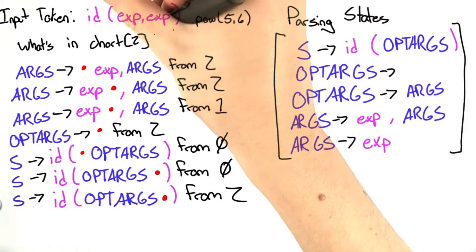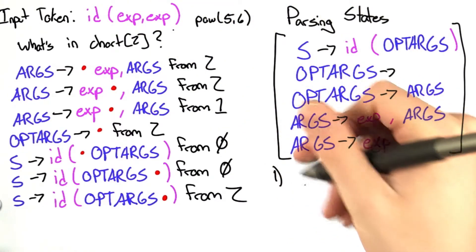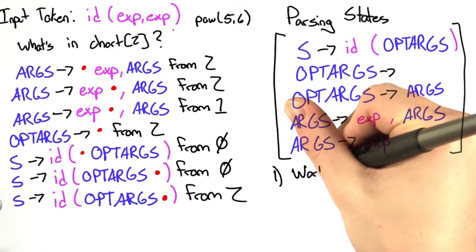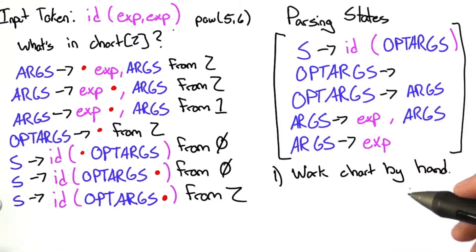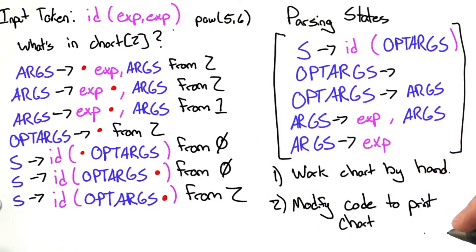Since we're asking a question, we should remember question marks. There's really two ways to solve this. The first is you work out the chart by hand, and that's what we're going to do because it's easier to explain what's going on. An alternative, which is equally valid, is to take the code that we wrote in lecture and modify it to print the chart at every given state.